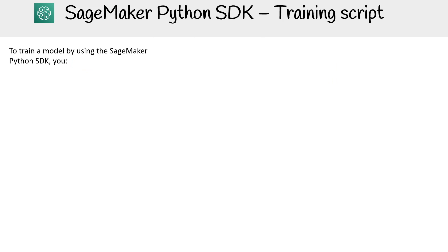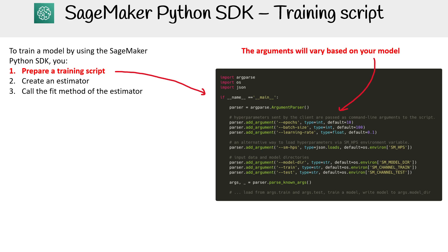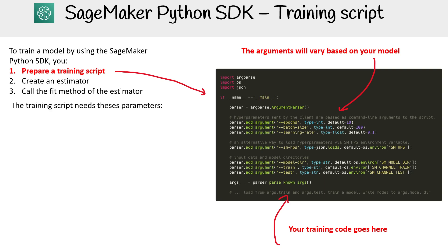Let's talk about training scripts. To train a model using the SageMaker Python SDK, you prepare a training script, create the estimator, and call the fit method on the estimator. The arguments are going to vary based on your model — different models have different parameters — and your training code goes there. For the most part it follows that pattern, but you have to create that training script.